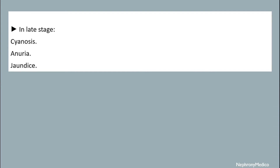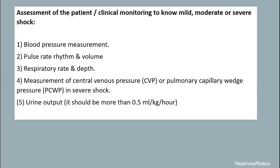In the late stage, cyanosis, anuria, and jaundice may be seen. Assessment of the patient includes blood pressure measurement, pulse rate, rhythm and volume, respiratory rate and depth, measurement of CVP or PCWP in severe shock, and urine output.